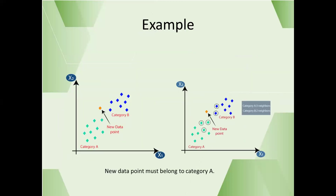Let us take a very simple example to understand the k-nearest neighbor algorithm. I take a dataset which has two categories or classifications. The classes are represented by the blue and green dots. I take a new data point, which is represented as the orange point in our graph.